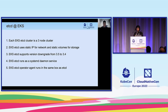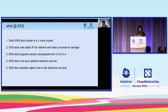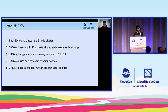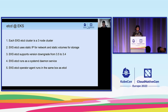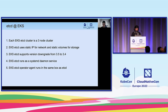Etcd at EKS: each EKS etcd cluster is a three-node cluster evenly distributed across three availability zones in a region. Availability zones are isolated data centers located within specific regions in which public cloud services originate and operate. EKS etcd uses static IP to advertise to the etcd client what endpoint it should connect to and for peer communication. We also use static volumes to store WAL and DB files. Static here means every etcd node uses the same IP and volume after the previous node is terminated.